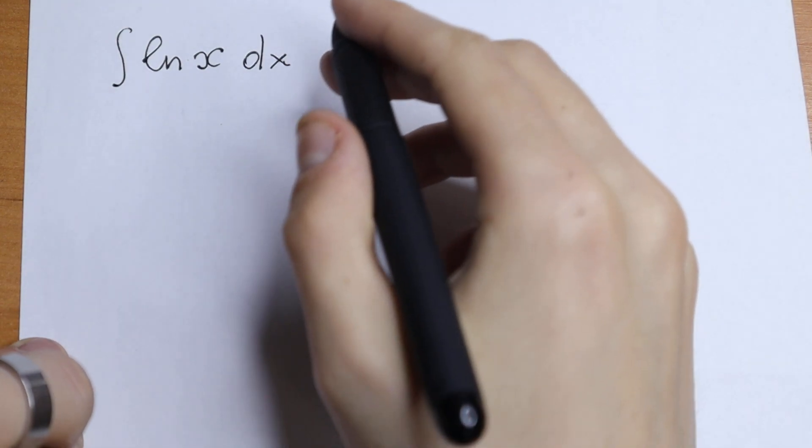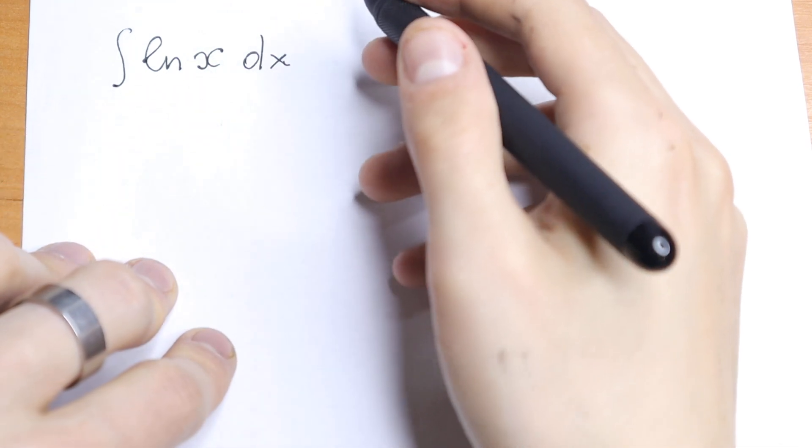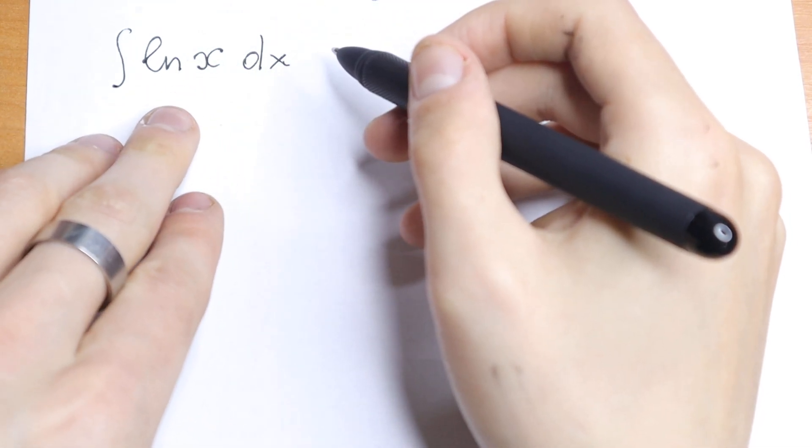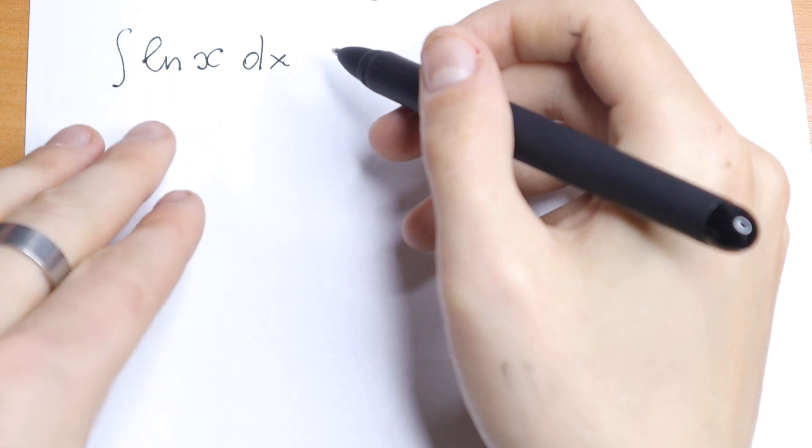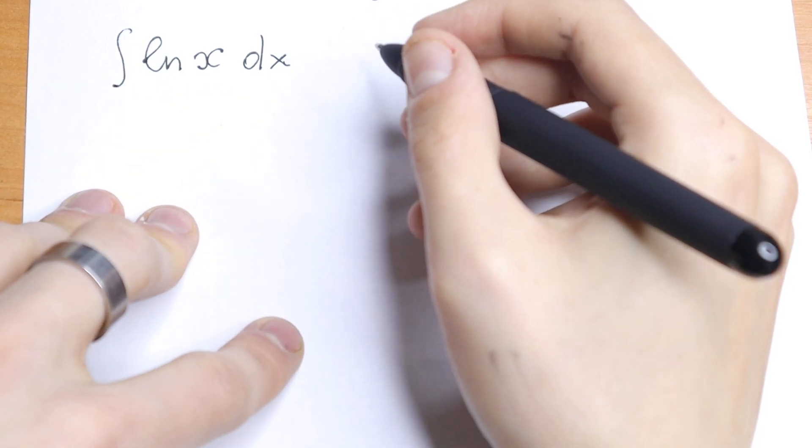Hello everyone, welcome back to HIGHMATHEMATICS. Today we have an interesting integral, the integral of ln(x). At first, this integral looks really easy, it looks like our table case, but in our tables we don't have this integral of ln(x). How can you solve it?